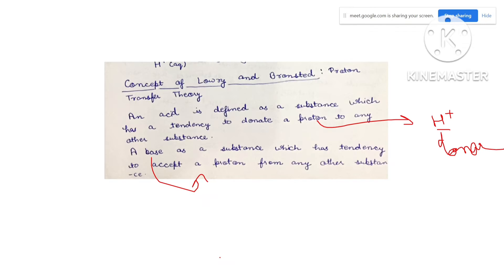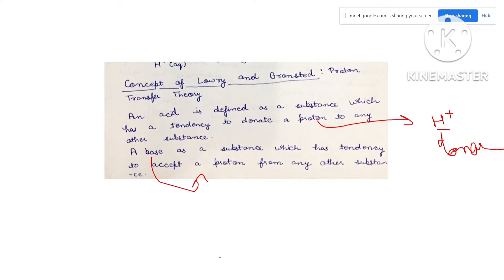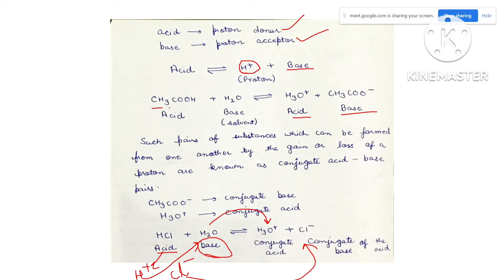The first definition was the Arrhenius concept: acid is the substance which releases H positive ions when dissolved in water, and base is the substance which furnishes OH negative ions when dissolved in water. In the case of Bronsted-Lowry, acid is the substance which donates H positive ions, and base is the substance which accepts H positive ions. In the case of acetic acid, it also dissociates as CH3CO negative and H positive. This H positive is taken up by a water molecule, which acts as the base since it accepts the proton from the acid, making acetic acid the acid as it donates the H positive ion.